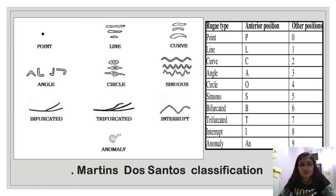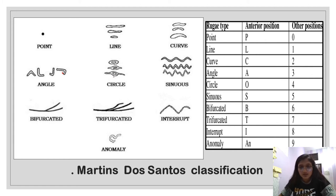Martin's classification considered the following structures: points, lines, curves, angles (including 90-degree and other angles), circles, sinuses, bifurcated, trifurcated, interrupted, and anomalous rugae. The anterior position is denoted by a capital letter and all other positions are denoted by numbers.